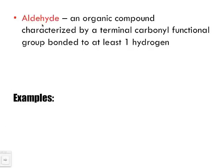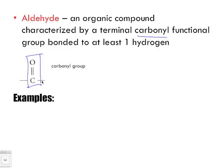First, let's look at the definition of an aldehyde. An aldehyde is an organic compound characterized by a terminal carbonyl functional group bonded to at least one hydrogen. A few key words here: we've got a carbonyl functional group, which is a C double bonded to an O. Another key word typical of aldehydes is the word terminal, which means it's going to be located at the end of a chain of carbons.